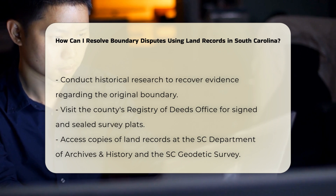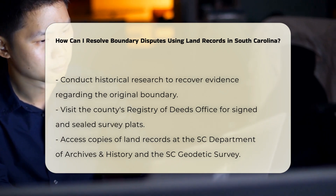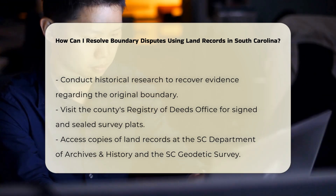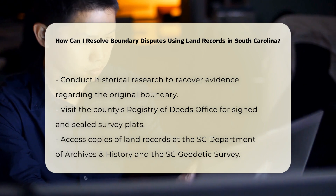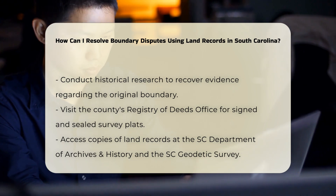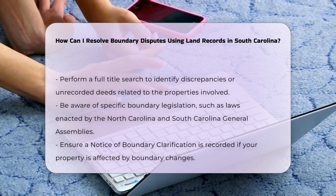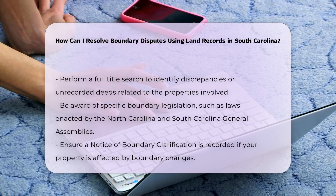Analyze boundary legislation. Be aware of specific legislation related to boundary clarifications. For instance, the North Carolina General Assembly and the South Carolina General Assembly enacted laws — Session Law 2060-23 and Senate Bill 667, respectively — to clarify the boundary between the two states. These laws took effect on January 1st, 2017, and impact approximately 1,400 parcels of real property.